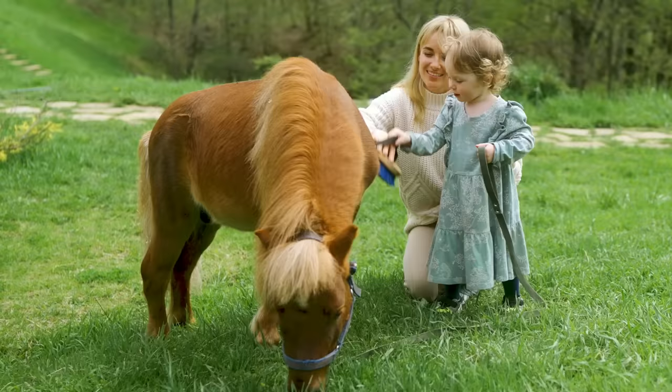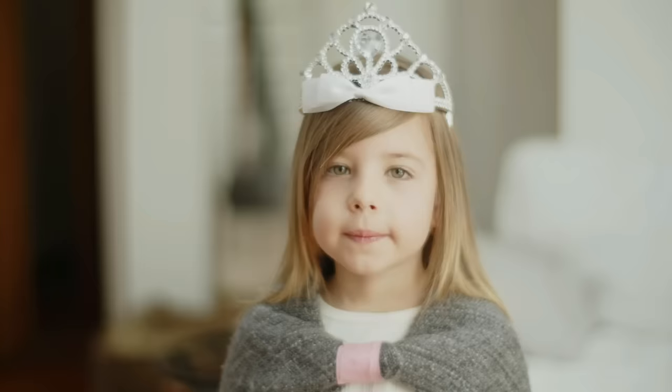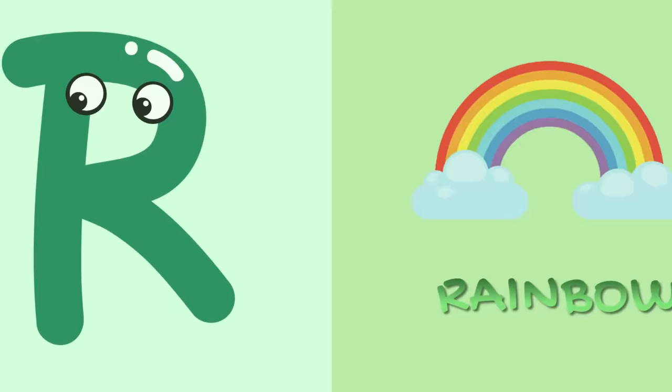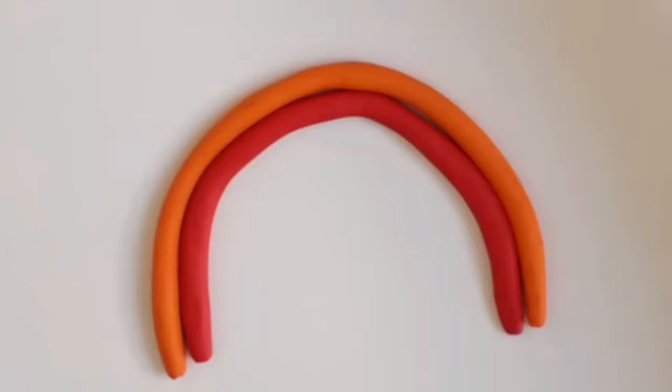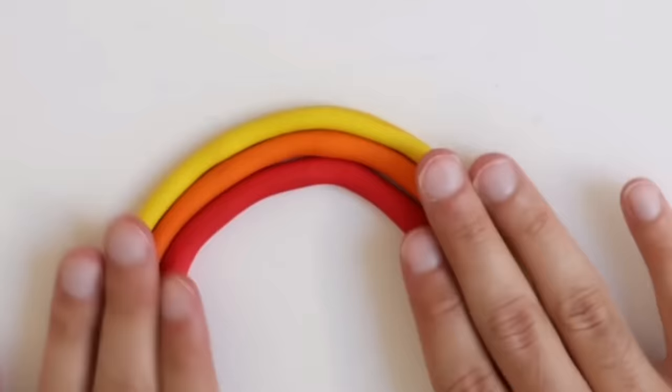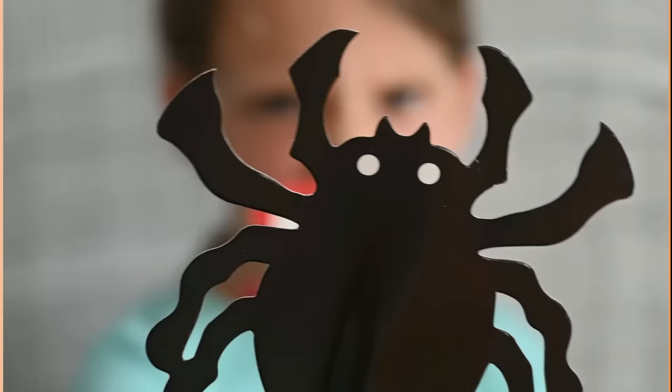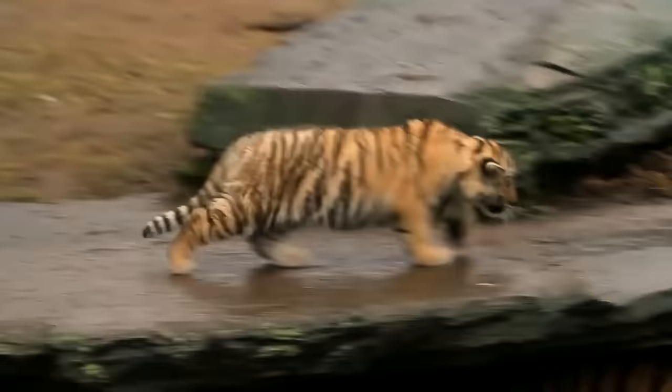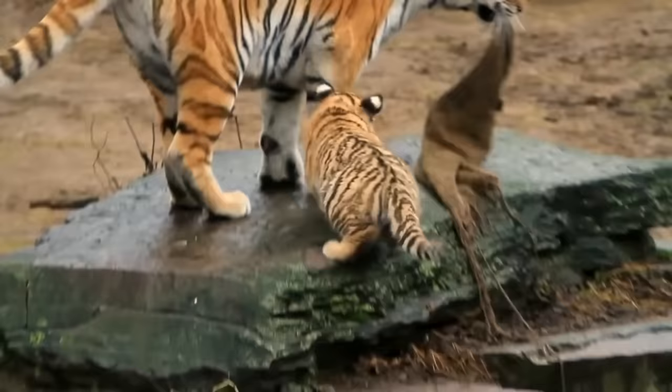P is for pony. p-p-pony. p-p-pony. P, pony. Q is for queen. k-k-queen. k-k-queen. Q, queen. R is for rainbow. r-r-rainbow. r-r-rainbow. R, rainbow. S is for spider. s-s-spider. s-s-spider. S, spider. T is for tiger. t-t-tiger. t-t-tiger. T, tiger.